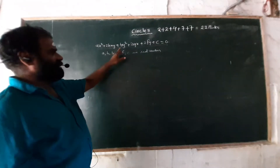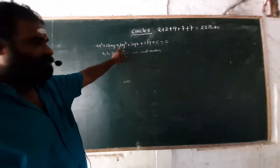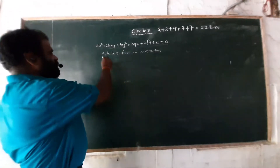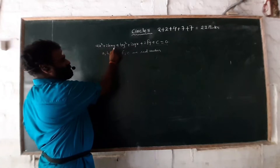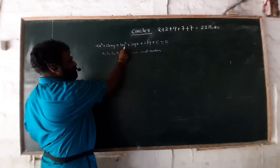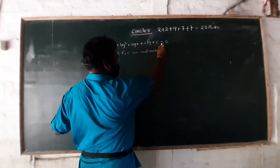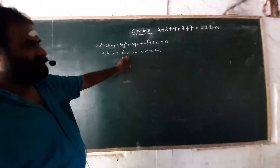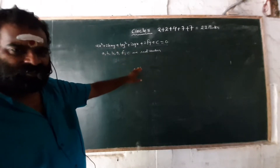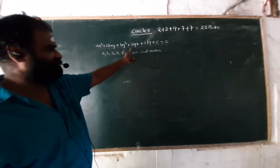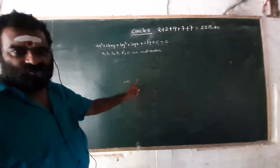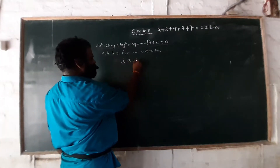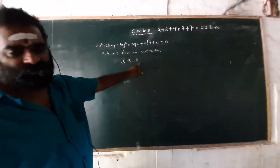Now, from this second degree equation, we are going to find out the general form of a circle. If the second degree equation ax² + 2hxy + by² + 2gx + 2fy + c = 0 represents a circle, then the equation must satisfy three conditions. The first condition is a = b.